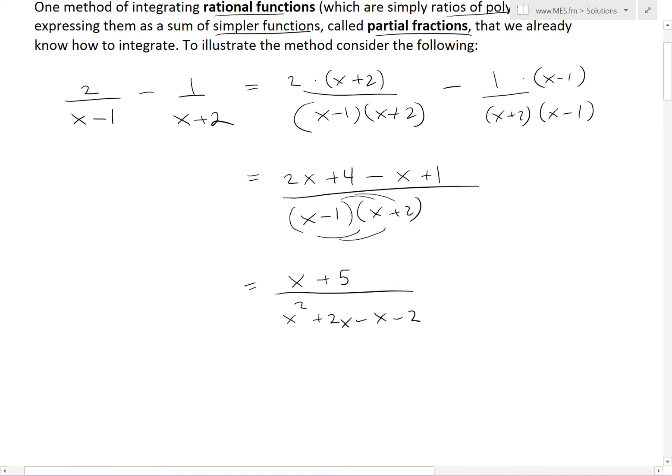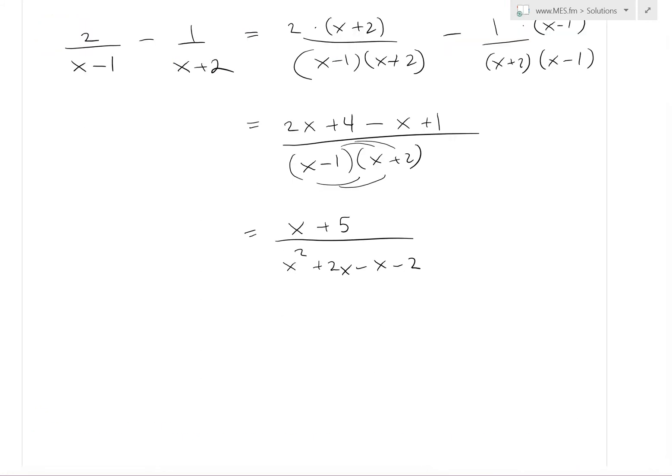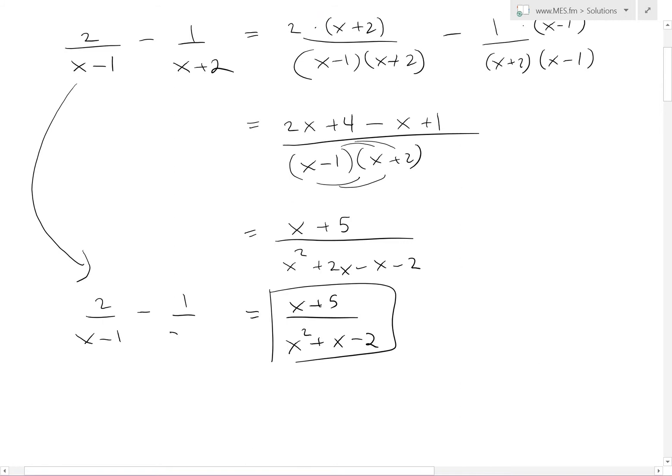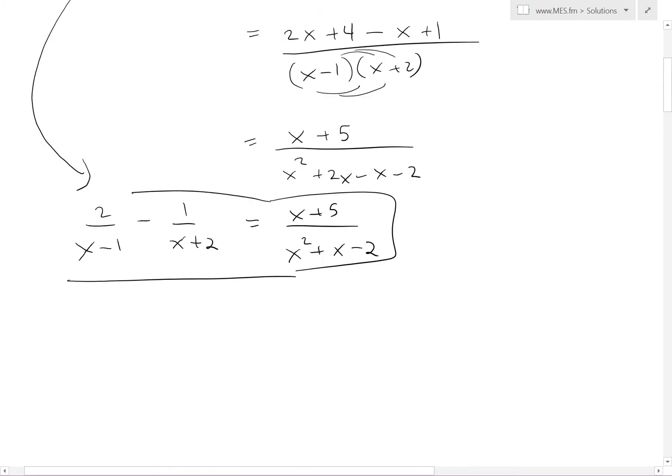And now that we have right here a minus 2. So this equals, this basically equals x plus 5, just simplify this, x squared plus x minus 2. So, what we've just shown is that this equals to this right here, so 2 over x minus 1 minus 1 over x plus 2. And I'll just circle this right here.